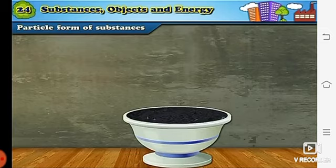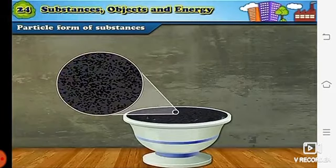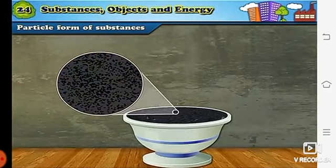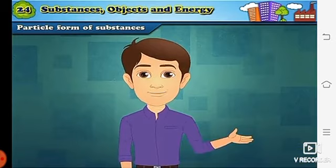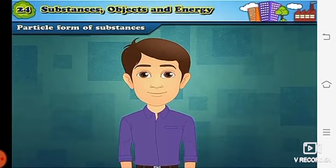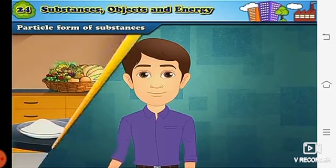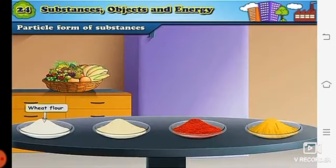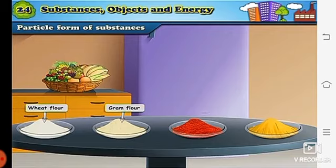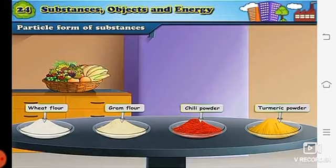These are the small particles of coal what you are able to see on the screen. In the same way, all substances what we see around us are made up of very tiny particles. So here are some powdered things what we use in kitchen. They are wheat flour, ground flour that is besan, chili powder and turmeric powder. So are these in powdered form? Yes. And these powdered form substances we are using in our kitchen.